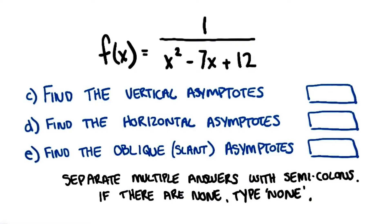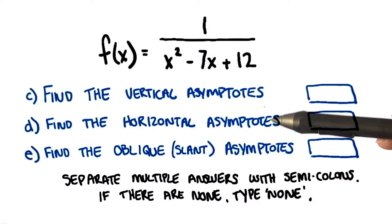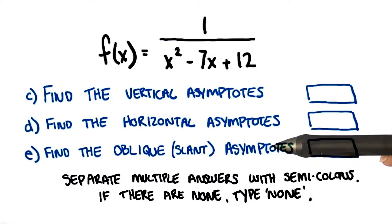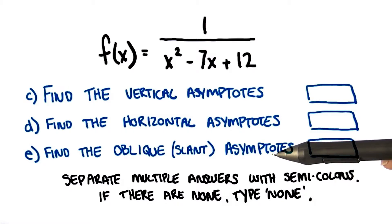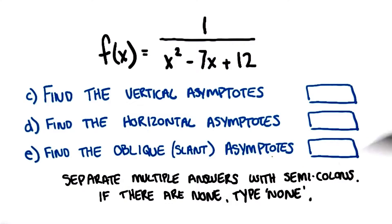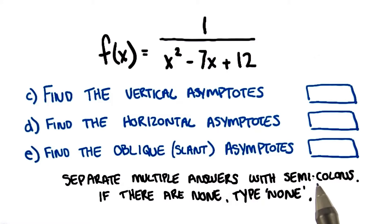Now for the asymptotes. Let's check for vertical, horizontal, and oblique, otherwise known as slant asymptotes. If it has none of a particular type, write none in the box. Separate multiple answers with semicolons.